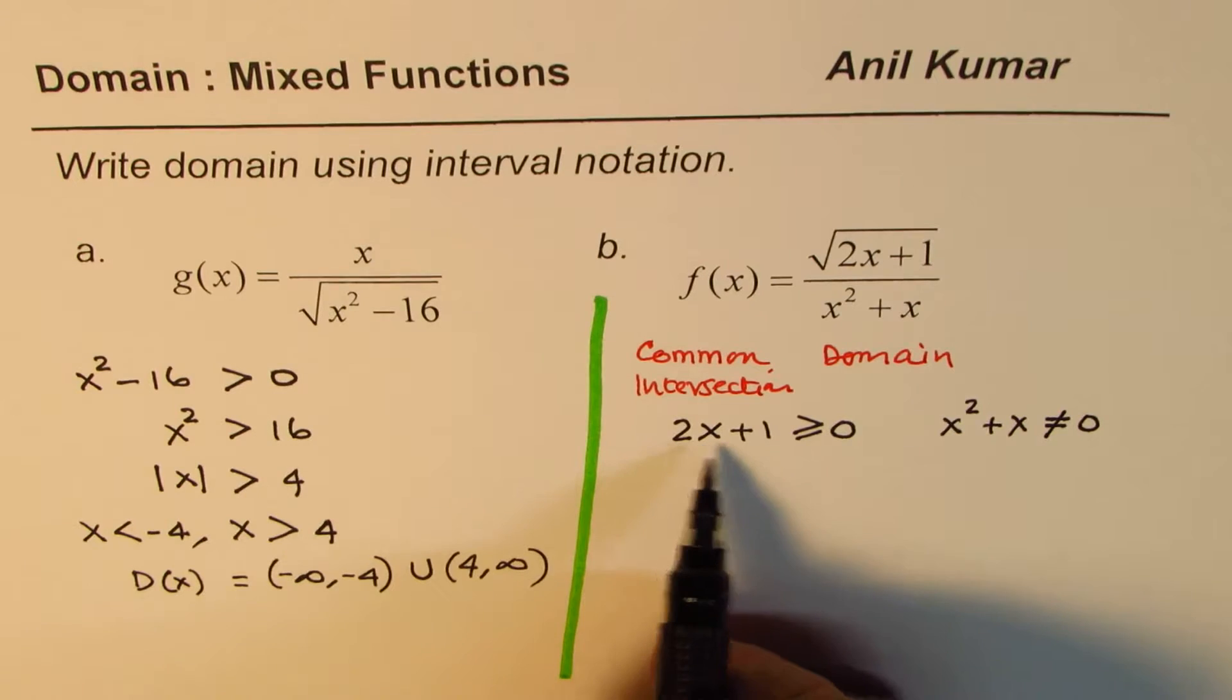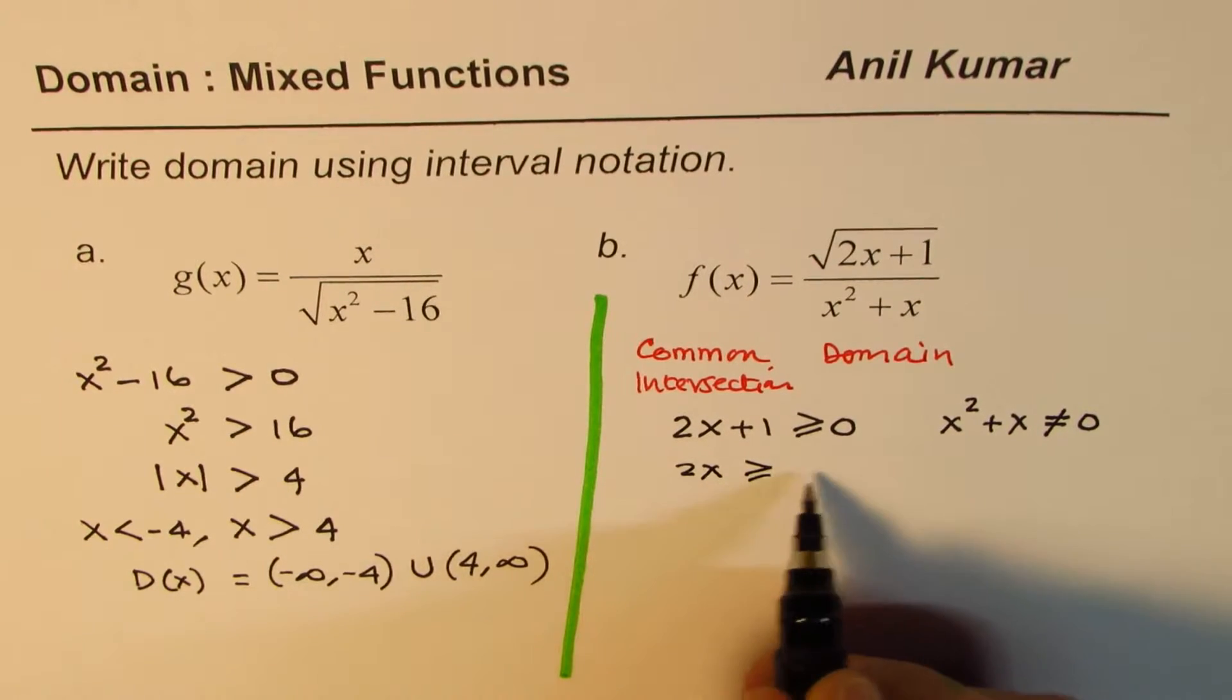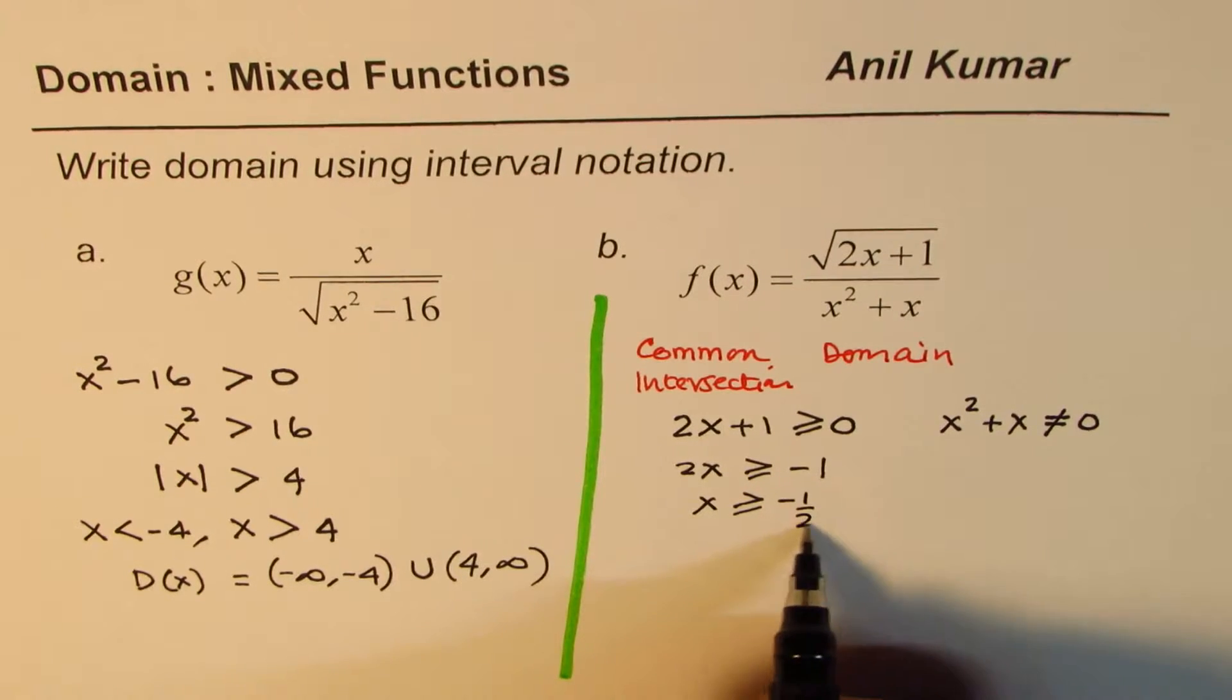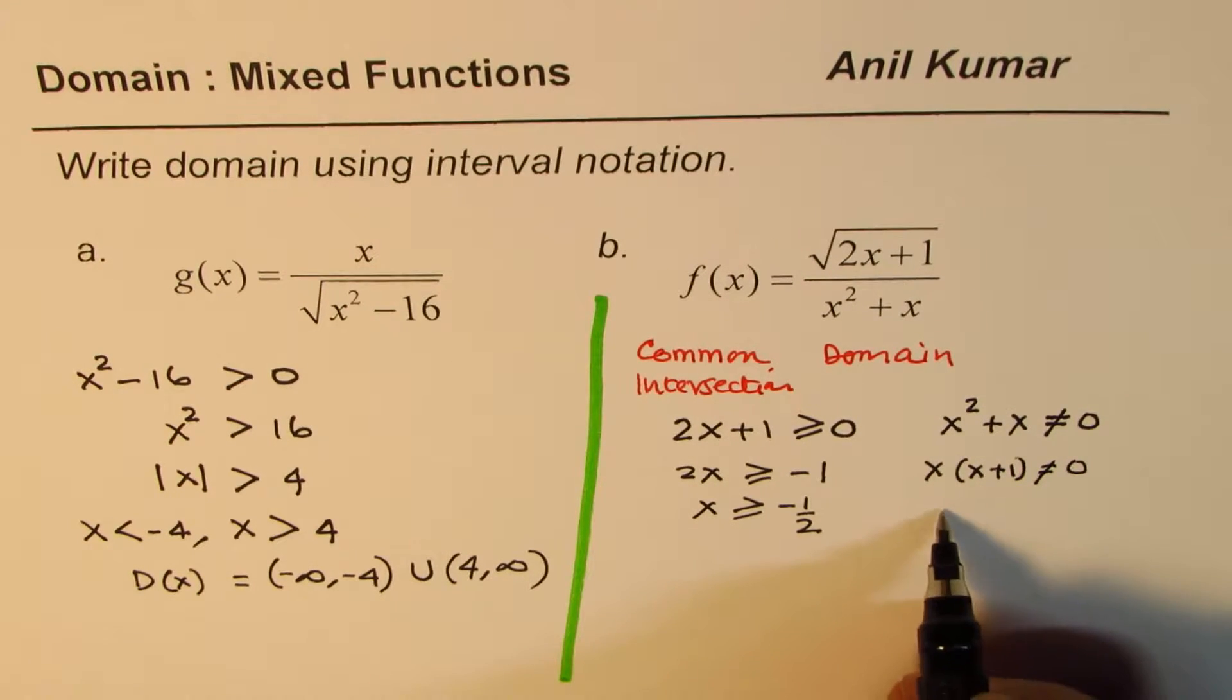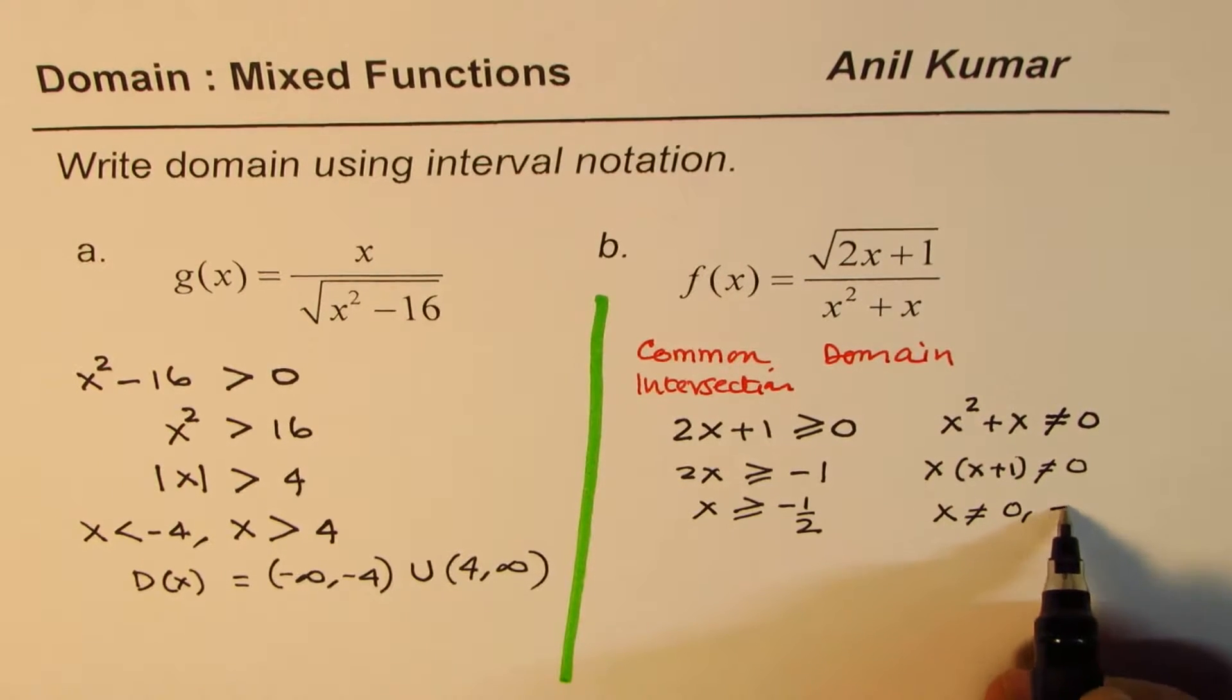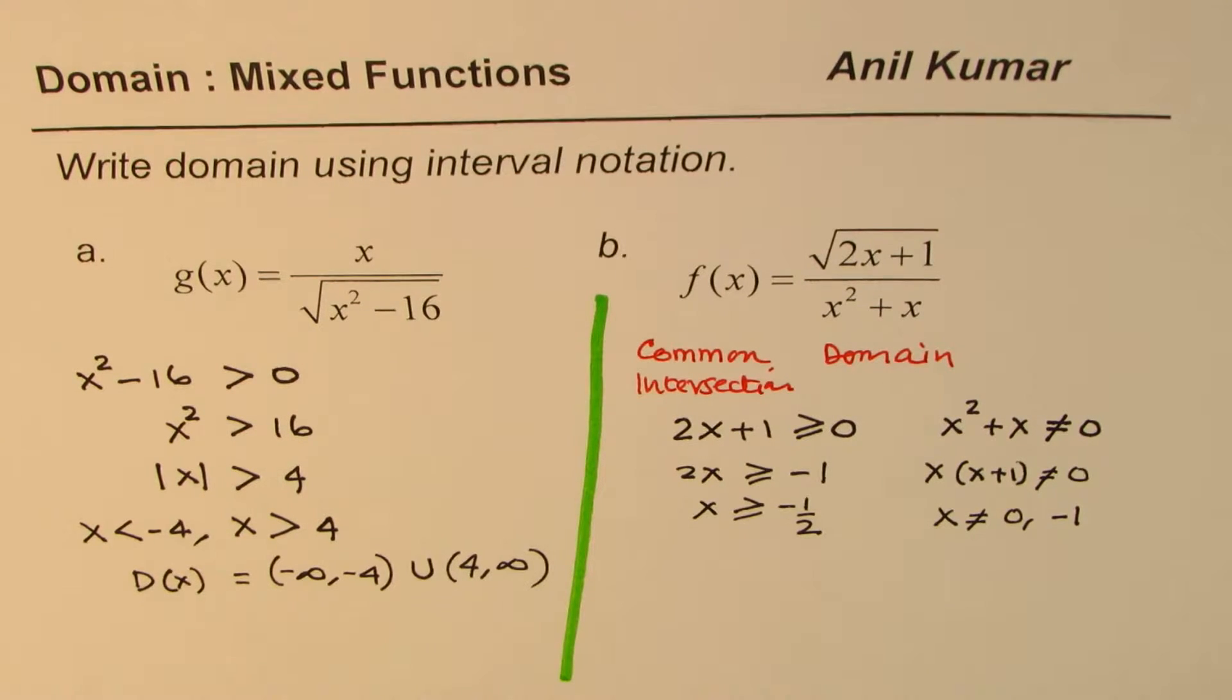2x plus 1 greater than or equal to 0 means 2x is greater than or equal to minus 1, so x is greater than or equal to minus half. Here we could factor out x times x plus 1 is not equal to 0, that means x is not equal to 0 or minus 1. So that becomes part of our domain calculation.